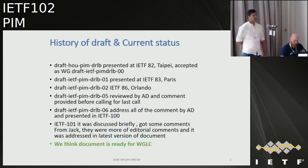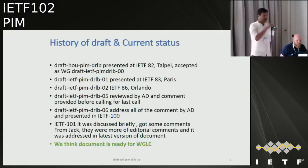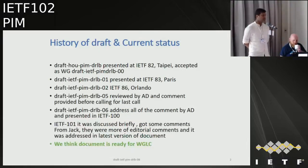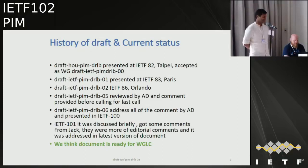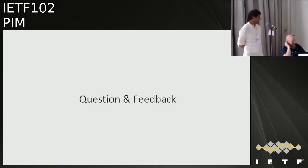This is a small update for the DR load balancing draft. It got adopted as a working group document at IETF 82, then there was a big pause. At IETF 99 I presented it in Singapore. At IETF 100 we had comments from Jack Holland and I updated the document. Just two hours ago he sent me some more comments, but after addressing those I think it is ready for working group last call unless there are any other comments.